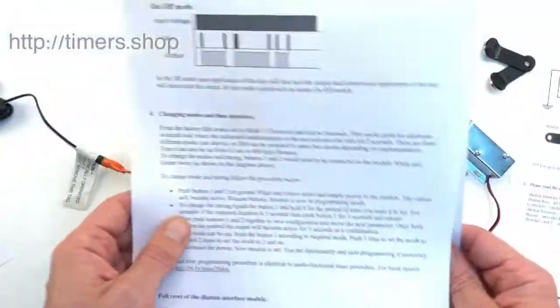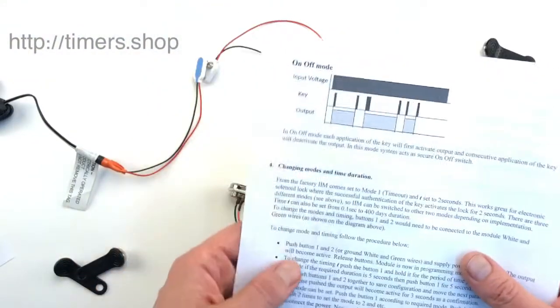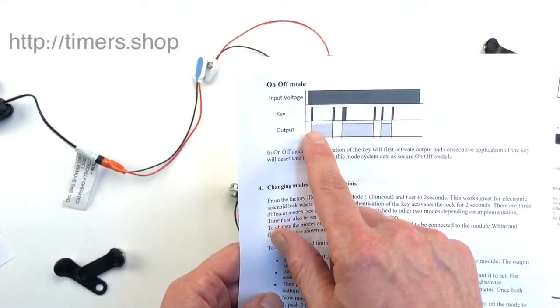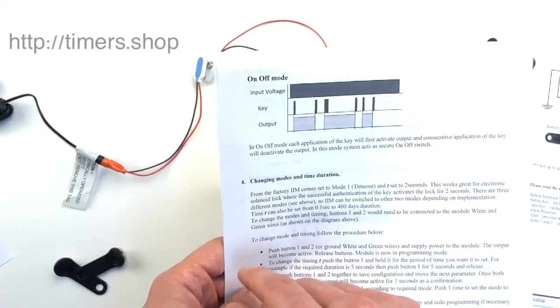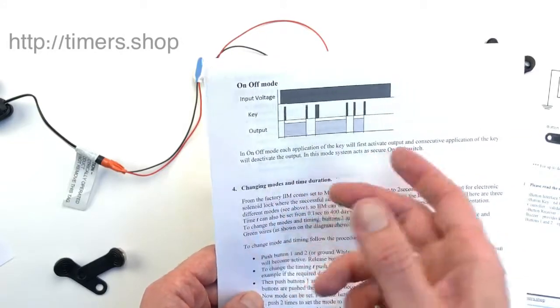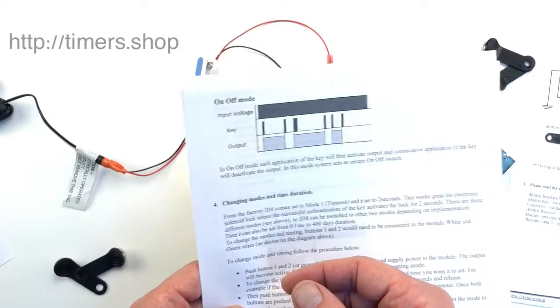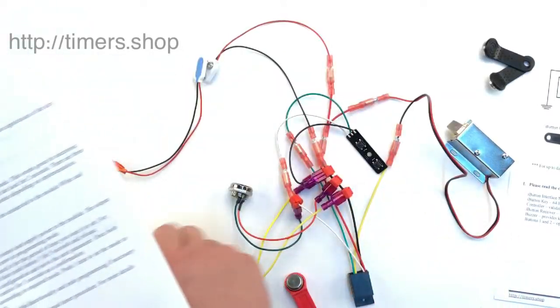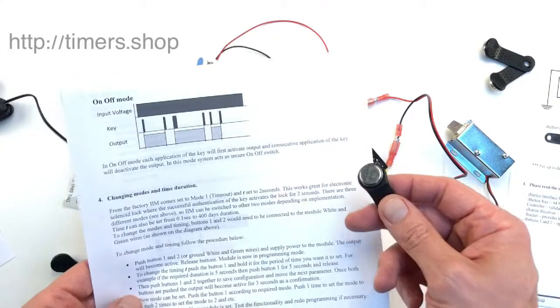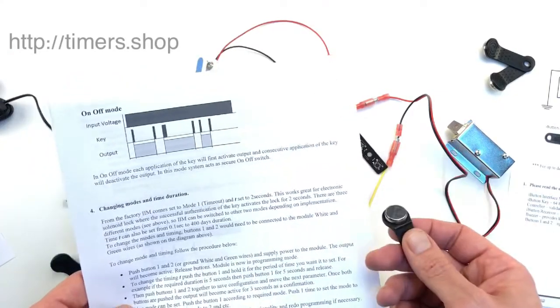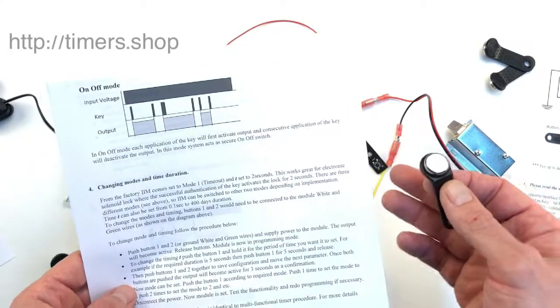The third mode is on/off mode without a timeout. The first touch activates the output, and it stays active until you touch the key again. This creates a secure on/off switch where only someone with the proper key can control the output, which could then control other devices.